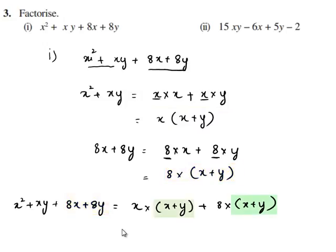Here we have x plus y as a common factor in both the terms. So using the distributive law we bring out the term x plus y and we are left over with x in the first term and 8 in the second term. So x plus y times x plus 8 is the required factor form and the irreducible factors of the given expression are x plus y and x plus 8.